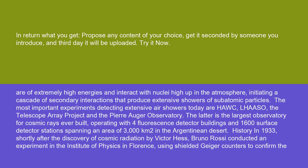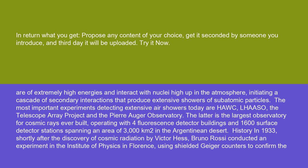History. In 1933, shortly after the discovery of cosmic radiation by Victor Hess, Bruno Rossi conducted an experiment in the Institute of Physics in Florence using shielded Geiger counters to confirm the penetrating character of the cosmic radiation. He used different arrangements of Geiger counters, including a setup of three counters where two were placed next to each other and a third was centered underneath with additional shielding.